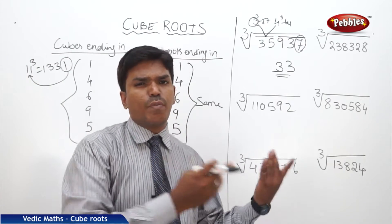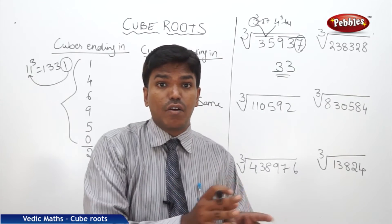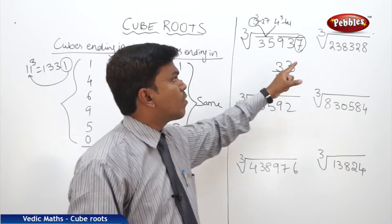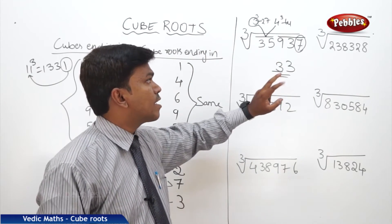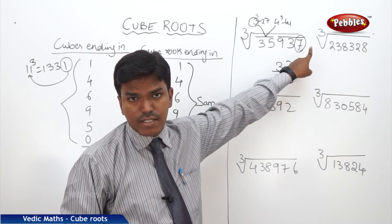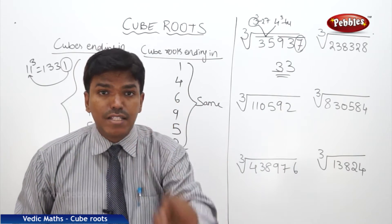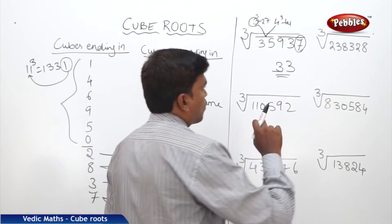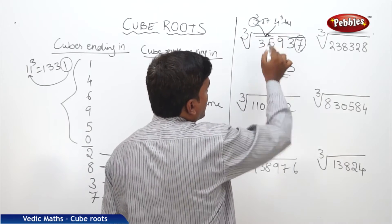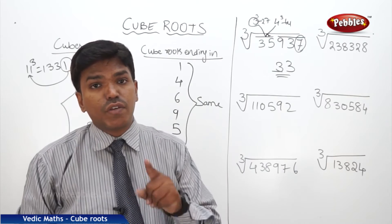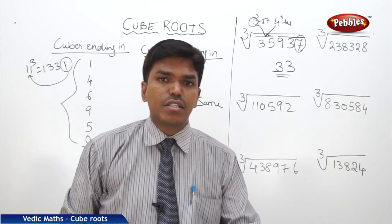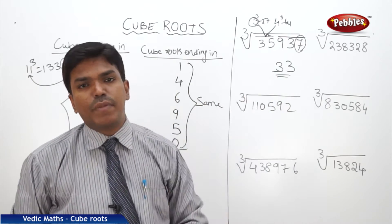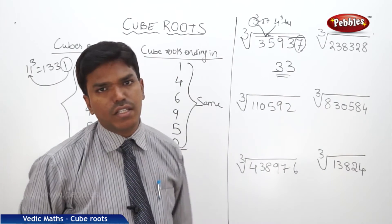Unlike square roots, there is no need to check two possibilities here — we get only one possibility, so we can directly state the answer. To summarize: step one, make a 3-digit partition from the right. Step two, check the last digit of the cube number — it ends in 7, so the cube root ends in 3. Step three, check the second partition (35) between which cubes it falls — between 27 and 64 — and take the lesser number, 3. So the cube root of 35937 is 33.